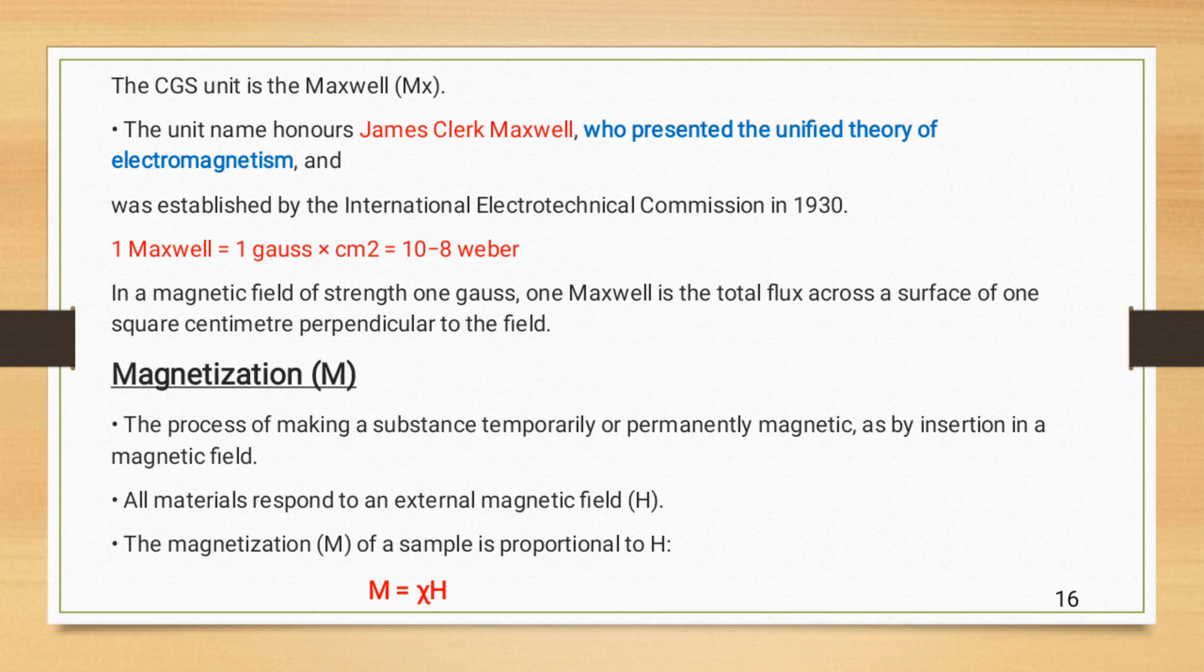So, this is the way that how we temporarily or permanently make a substance magnetic. All materials respond to an external magnetic field. The magnetization of a sample is proportional to magnetic field.